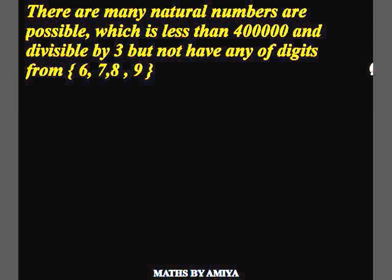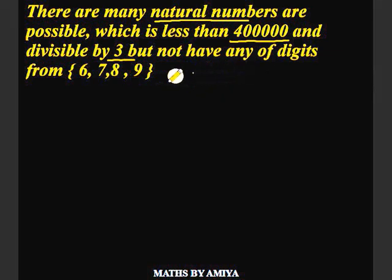Hello friends, what's up? In today's learning concept video, we try to solve a question which seems very tough, but we try to find the best way possible to solve these type of questions. The question is in front of you. How many natural numbers are possible which is less than 4 lakhs and divisible by 3 but not have digits 6, 7, 8, 9? First, we check how to solve these type of questions when the question is divisible by 3 and certain set of numbers.